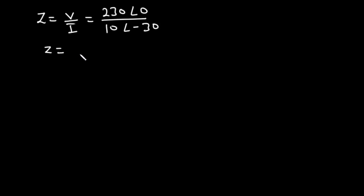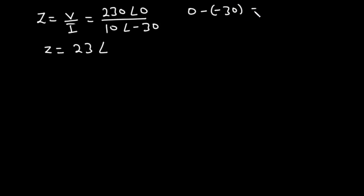To find the impedance, we divide 230 by 10, which is 23. For the angle, because we are dividing, we subtract: 0 minus negative 30, which equals 30. So the impedance is 23 angle 30 degrees.